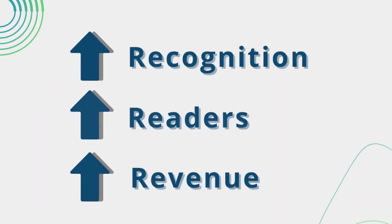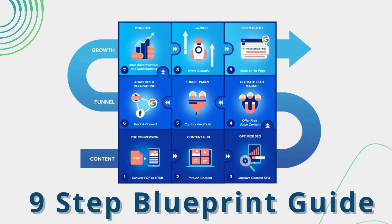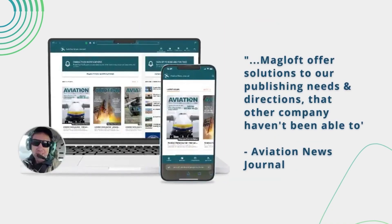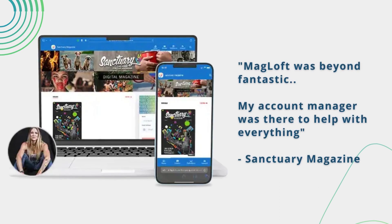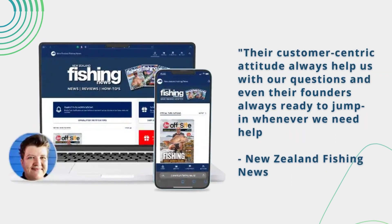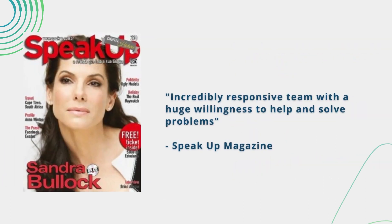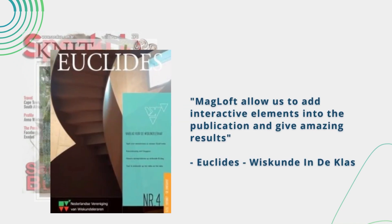Our team at McLove can help your publication to get more recognition, readers, and revenue using our proven 9-step blueprint guide in 30 days or less. We have worked with thousands of publishers worldwide to bridge their transition between print, mobile, and web to publish their own fully-branded, all-in-one online publishing solutions for web and mobile.